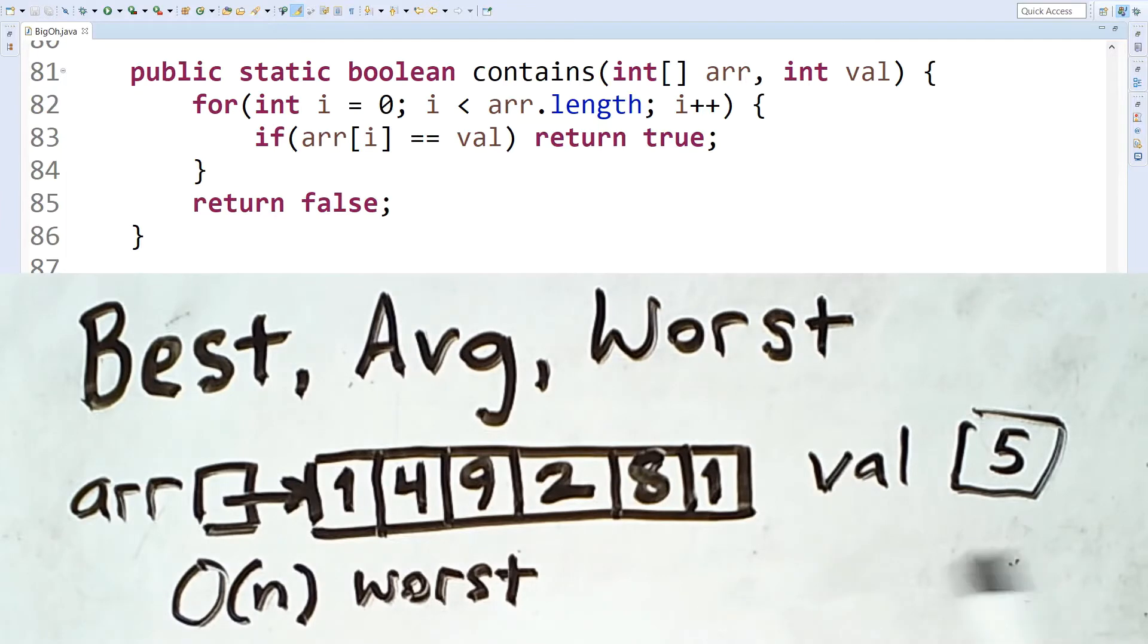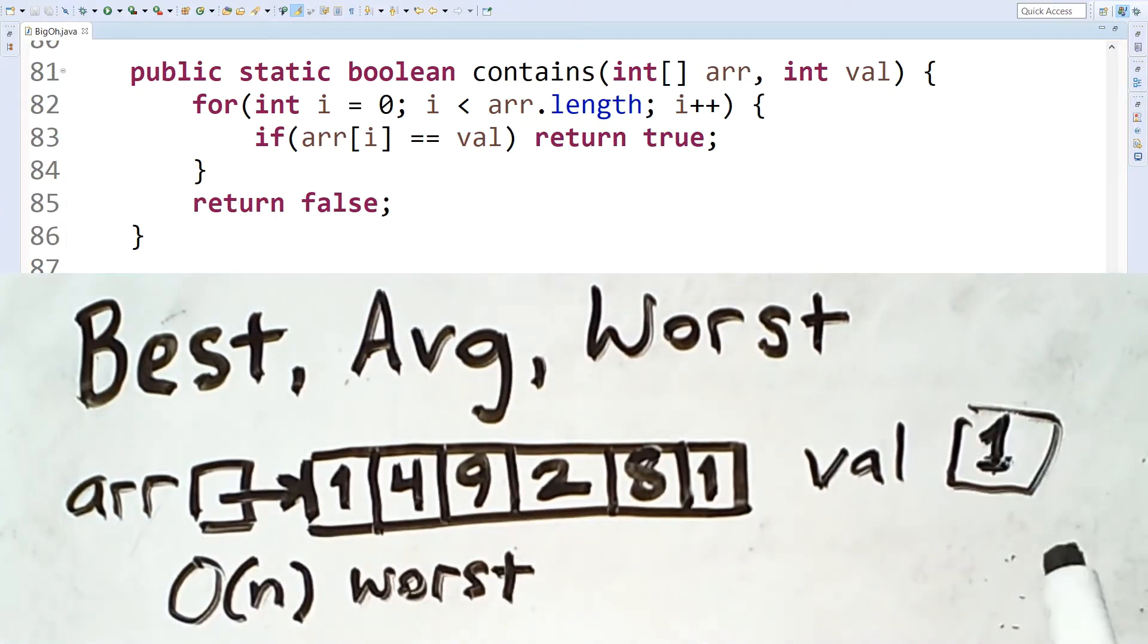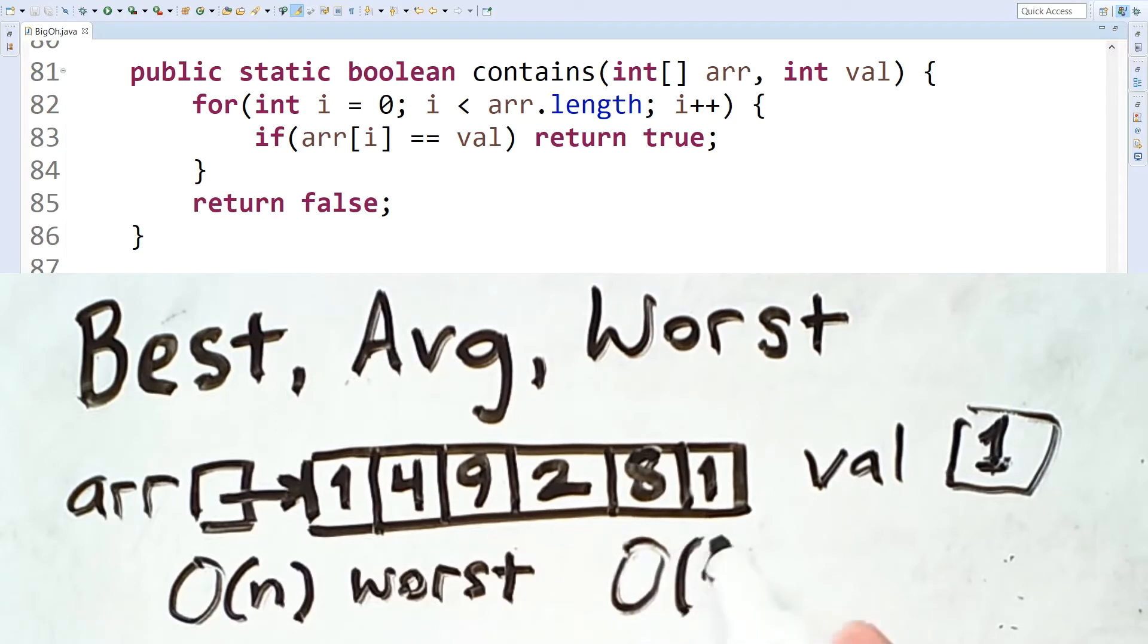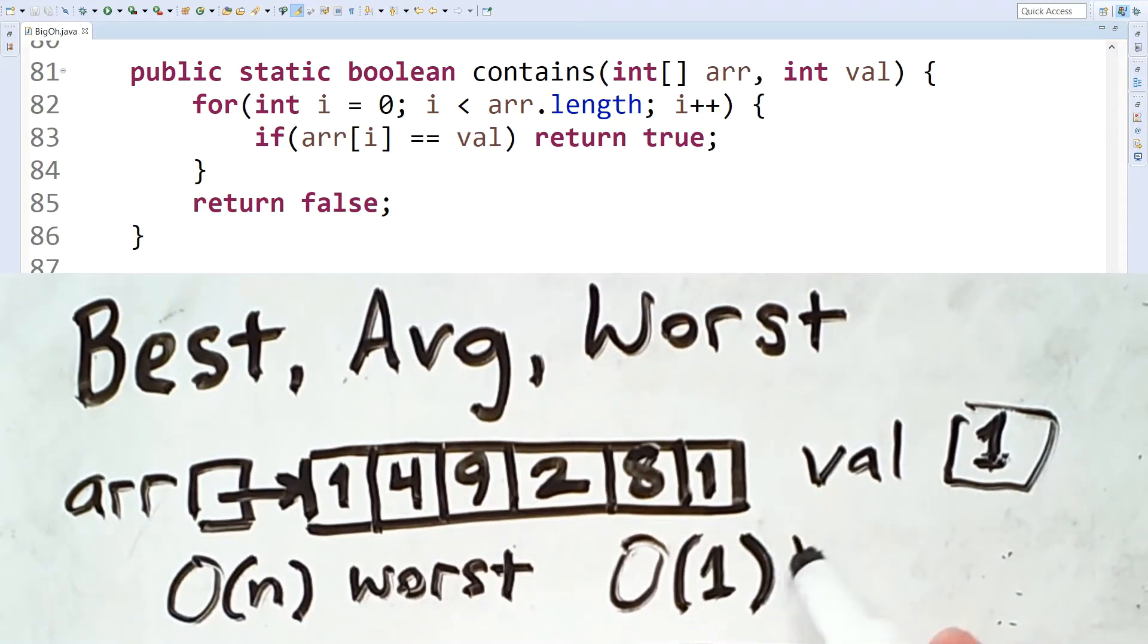But now, consider what happens if we are searching for the value 1. We would enter the for loop, check the first value at index 0, find the match, and then return true, immediately exiting the loop and the method. In this case, the runtime of the method is O of 1. Because this is as fast as the code can execute, this is considered the best case.